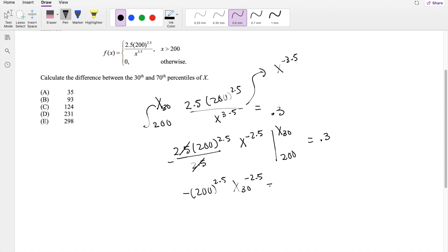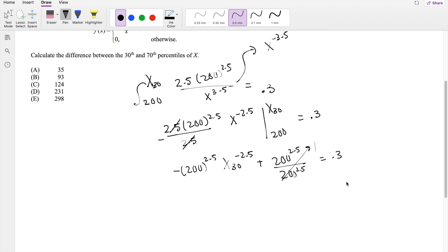Minus minus, that's positive, 200 to the 2.5. And right here, this is going to be 200 to the negative 2.5, which just puts it in the denominator. So this is equal to 1, equals 0.3. So I'm going to send the 0.3 over to this side, so you get 0.7.